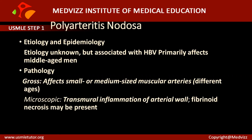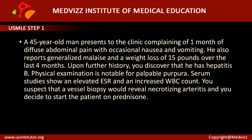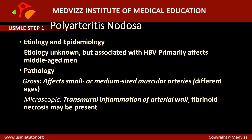Regarding the etiology and epidemiology of polyarteritis nodosa, the etiology is generally unknown, but it is associated with HBV infection in 30% of cases. It primarily affects middle-aged men — the typical age for PAN is approximately 45 years, which matches our case of a 45-year-old man with Hepatitis B.